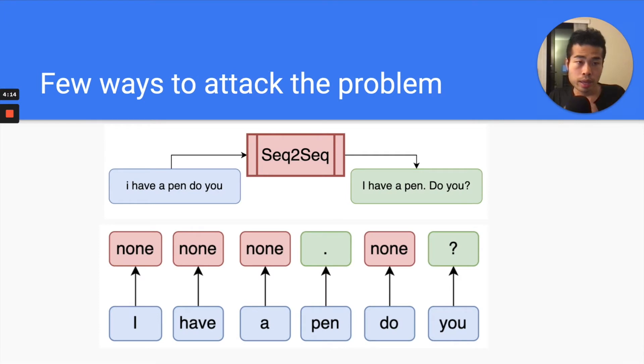There are a few ways to attack the problem. The first one is you can do a sequence to sequence model. Basically, you have the input tags unpunctuated tags. The model just generates your target, which is punctuated tags, and also do some capitalization. But the problem with this model is because it's sequence to sequence, it's usually auto-regressive model, it's quite slow. Definitely there are some non-auto-regressive sequence to sequence models, but still not as fast as sequence labeling in general.